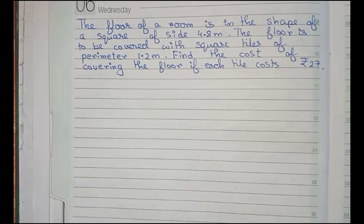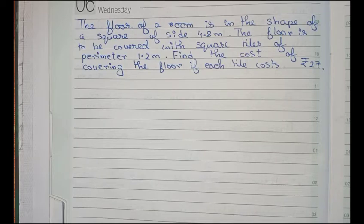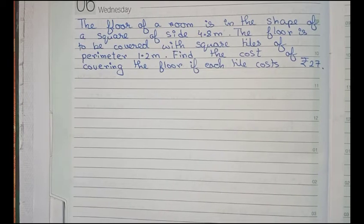Hello guys, welcome to this video. Our question is: the floor of a room is in the shape of a square of side 4.8 meters. The floor is to be covered with square tiles of perimeter 1.2 meters. Find the cost of covering the floor if each tile costs rupees 27.